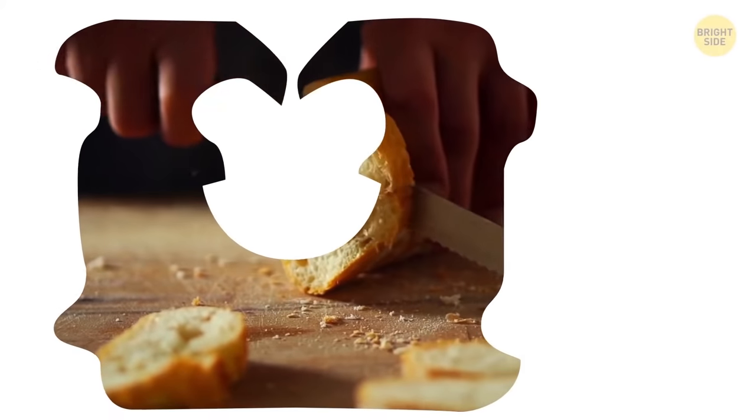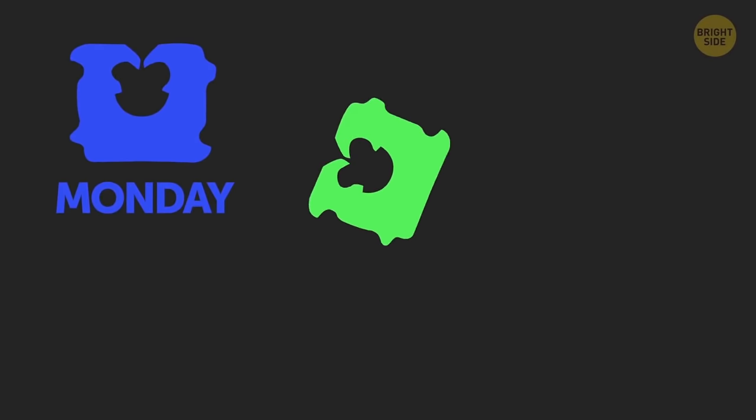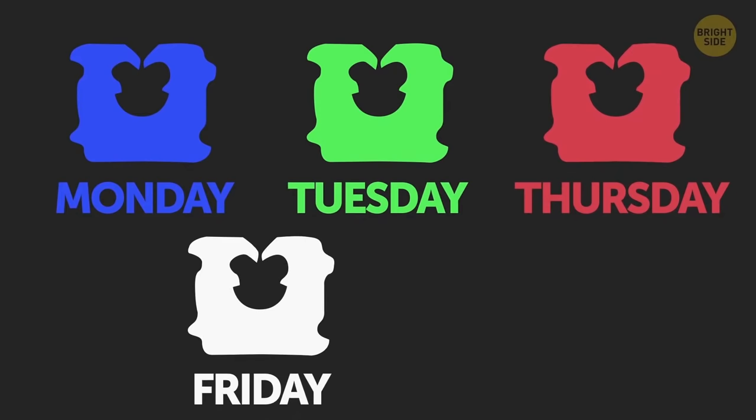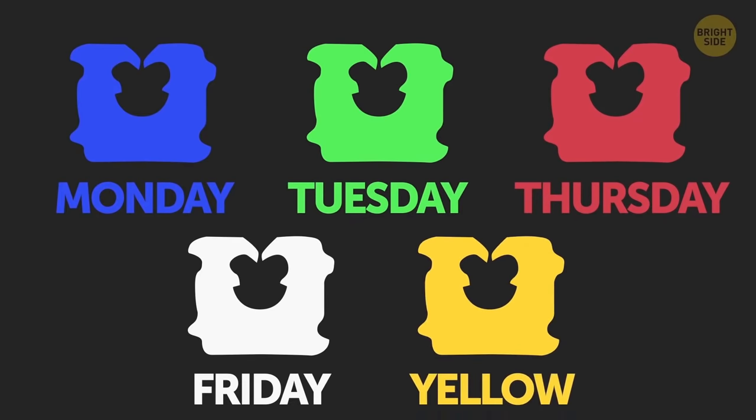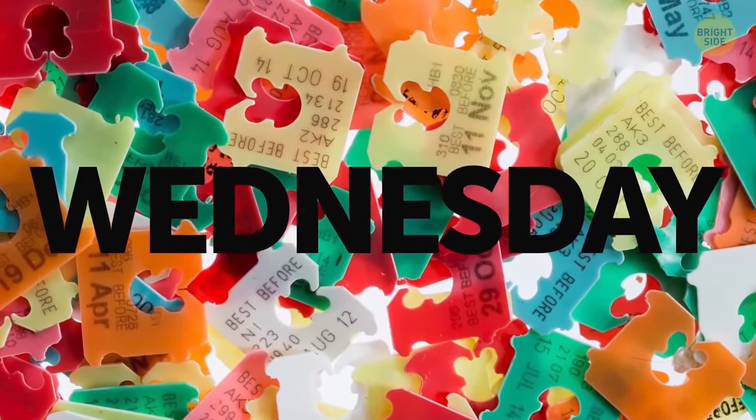Colorful plastic tags on bags of bread indicate when the loaf was baked. The color code is the following. Monday, a blue tag. Tuesday, green. Thursday, red. Friday, white. And on Saturday, you can buy fresh bread with a yellow tag. Apparently, they don't bake bread on Wednesday. That's so they can loaf around.